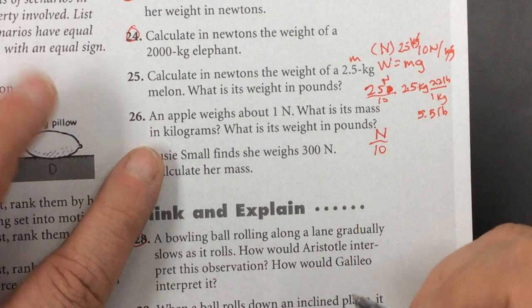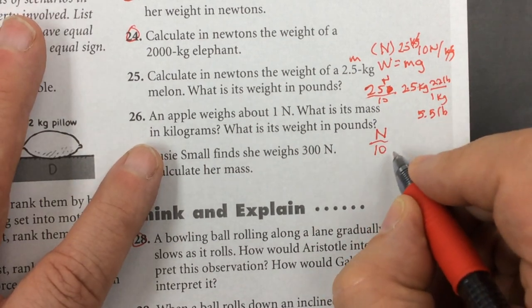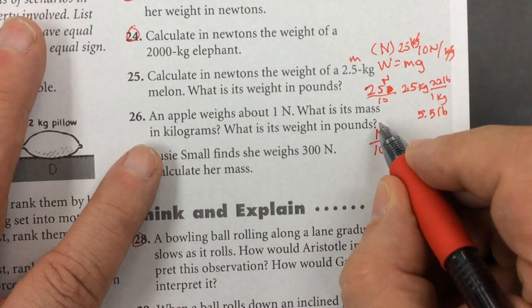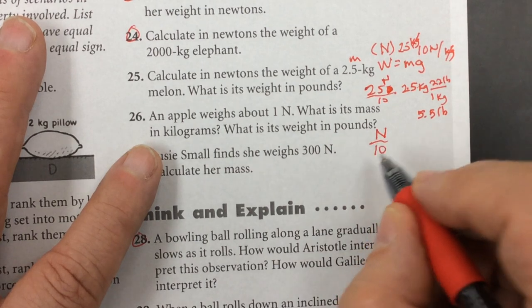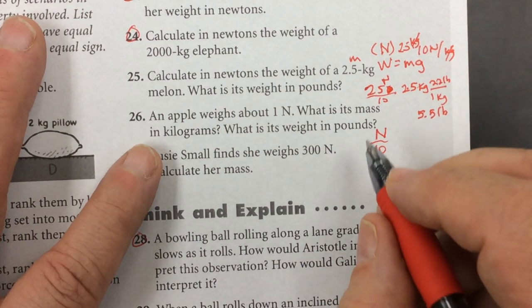So we're going to divide by gravity, gravity's 10. So gravity times kilograms is newton, so newtons divided by gravity is going to be kilograms.